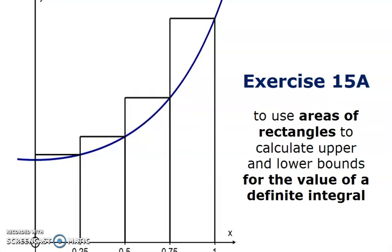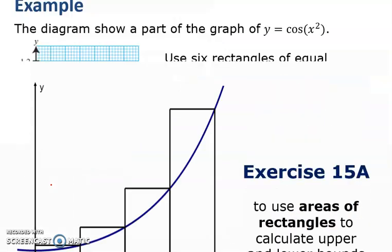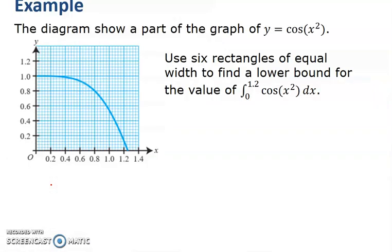Let's see what we can come up with. In the first example, this will show us really what's going on. The diagram shows part of the graph of y equals cos of x squared. It's not a graph you tend to look at — cos of x yes, cos of x squared, no. Obviously this has got to be in radians, so you'll need to set your calculator to radians.